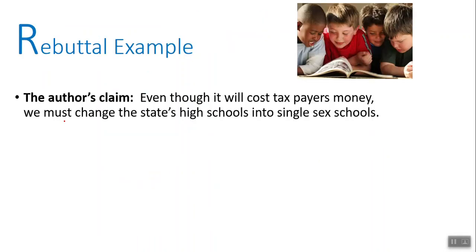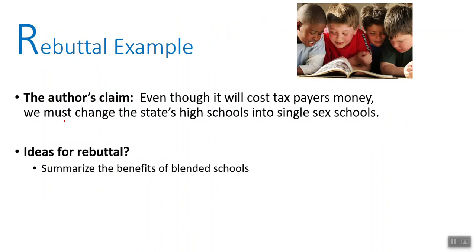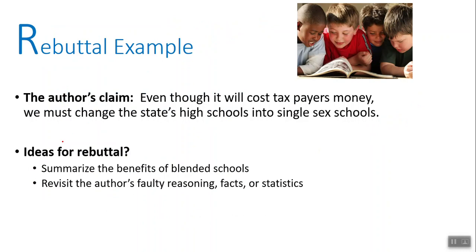Here's a rebuttal example. The author's claim was: 'Even though it will cost taxpayers money, we must change the state's high schools into single-sex schools.' This was not the student's claim but someone they were arguing against. In their conclusion, they summarized the benefits of blended schools — schools with both male and female students — revisited the author's faulty reasoning and statistics, and recapped the idea of a more cost-efficient solution, such as magnet schools or charter schools for boys or girls that parents could choose.